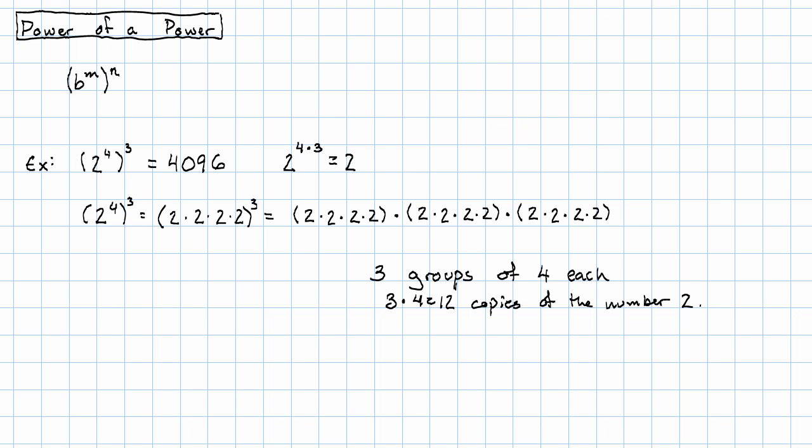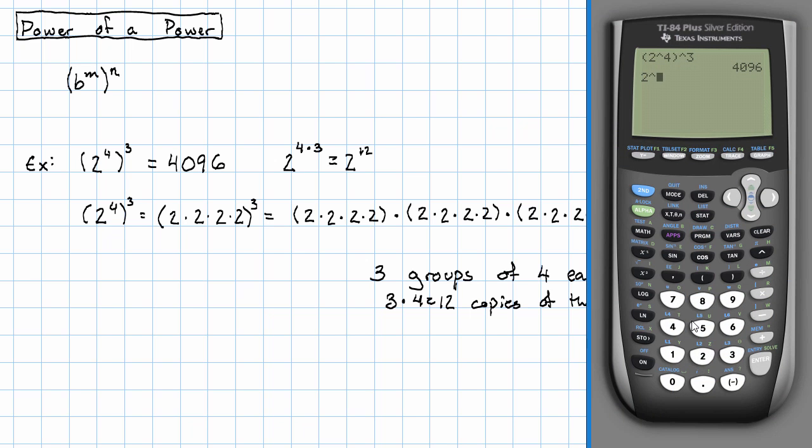We should have 2 to the 4 times 3. So that's 2 to the 12. Is that really the same? 2 to the 12th power really is 4096.